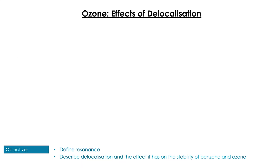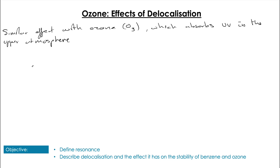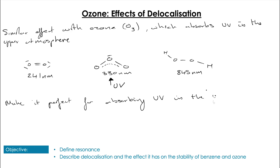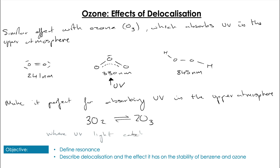We see the same effect with ozone. Ozone, which is O3, absorbs UV in the upper atmosphere. O2 has an associated wavelength of 241 nanometers, and the oxygen-oxygen single bond in hydrogen peroxide has an associated wavelength of 845 nanometers. However, because ozone has this resonance structure we end up with an associated wavelength of about 330 nanometers, which is perfect for absorbing UV radiation and allows the process to occur in the upper atmosphere where UV light catalyzes the reversible breakdown of O3 into O2.